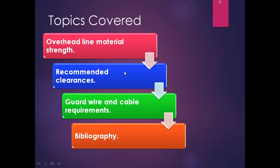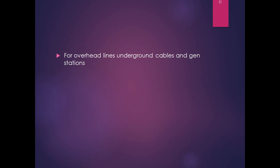Today we will see topics like overhead line material strength, recommended clearances, guard wire and cable requirements, and there is a slide on bibliography. First, we will go through the regulation regarding overhead line, underground cable, and generating station.